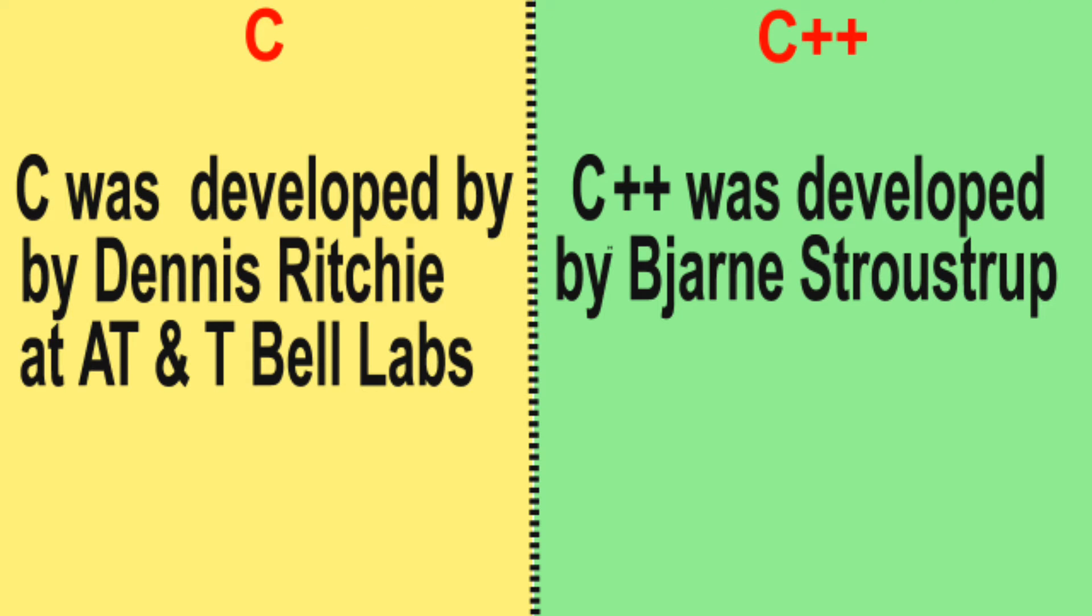Welcome to Computer Code Word channel. Difference number 1: C was developed by Dennis Ritchie at AT&T Bell Labs. C++ was developed by Bjarne Stroustrup.